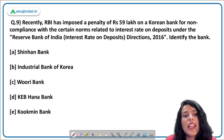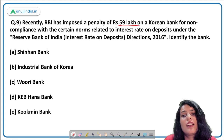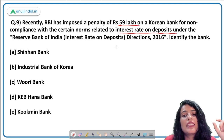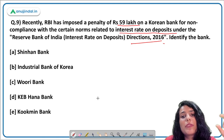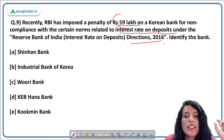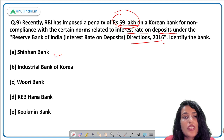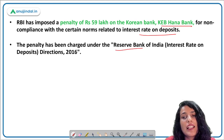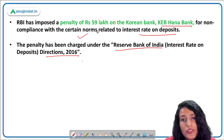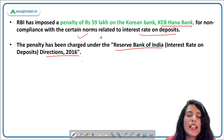Next: RBI has imposed a penalty of rupees 59 lakh on a Korean bank for non-compliance of norms related to interest rates on deposits under RBI interest rate on deposit directions. The options include Shinhan Bank, Industrial Bank of Korea, Uri Bank, KBHana Bank, and Kookmin Bank. The correct answer is KBHana Bank. This penalty was charged under RBI Directions 2016 for non-compliance with interest rate deposit norms.